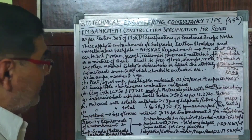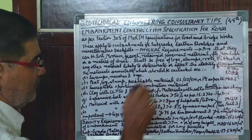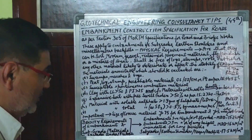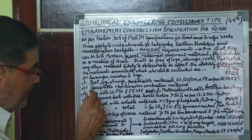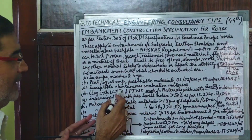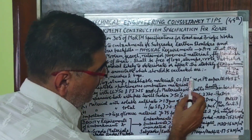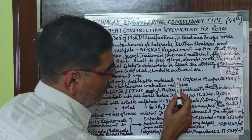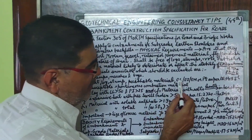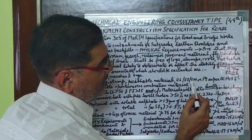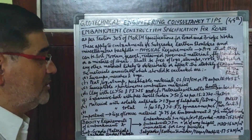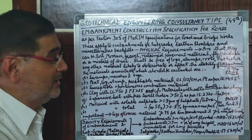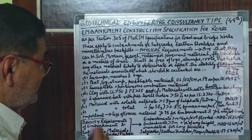The unsuitable materials which should definitely be excluded include swamps, marshes, logs, or any organic kind of soil — any perishable material such as OL, OH, or Pt soils as per IS 1498. OL stands for organic clay of low plasticity, OH for organic matter of high plasticity and compressibility. These kinds of soils should definitely be avoided and should not in any case be used as a material for road embankments.